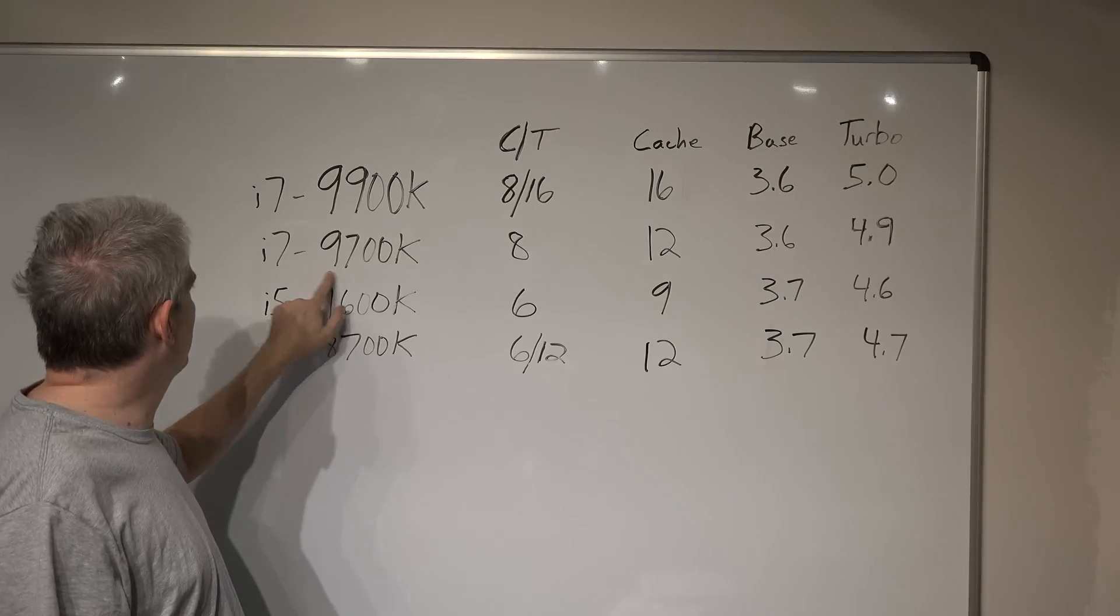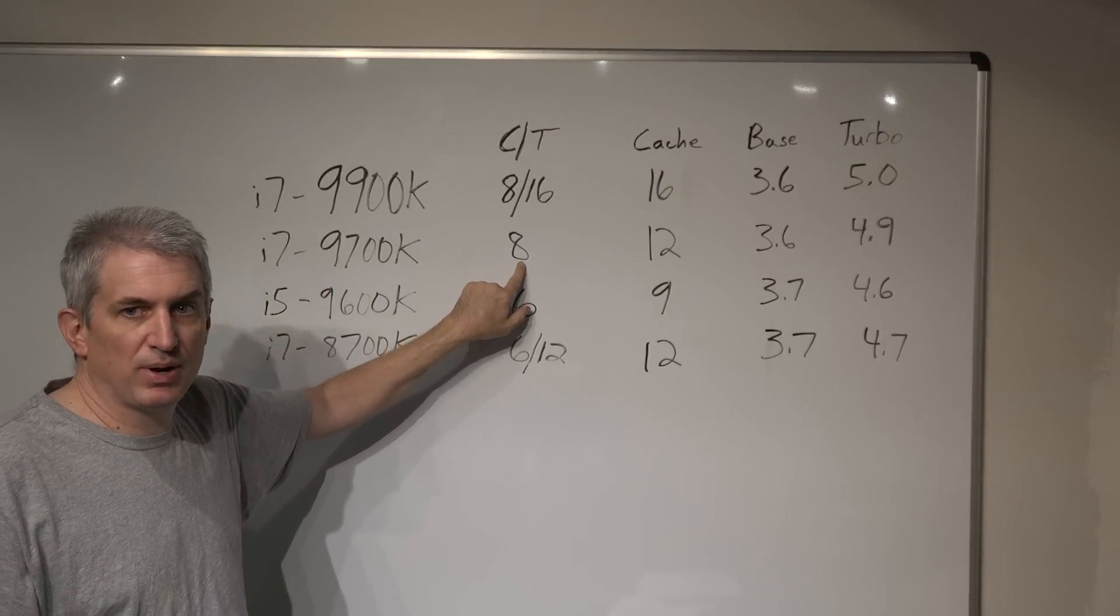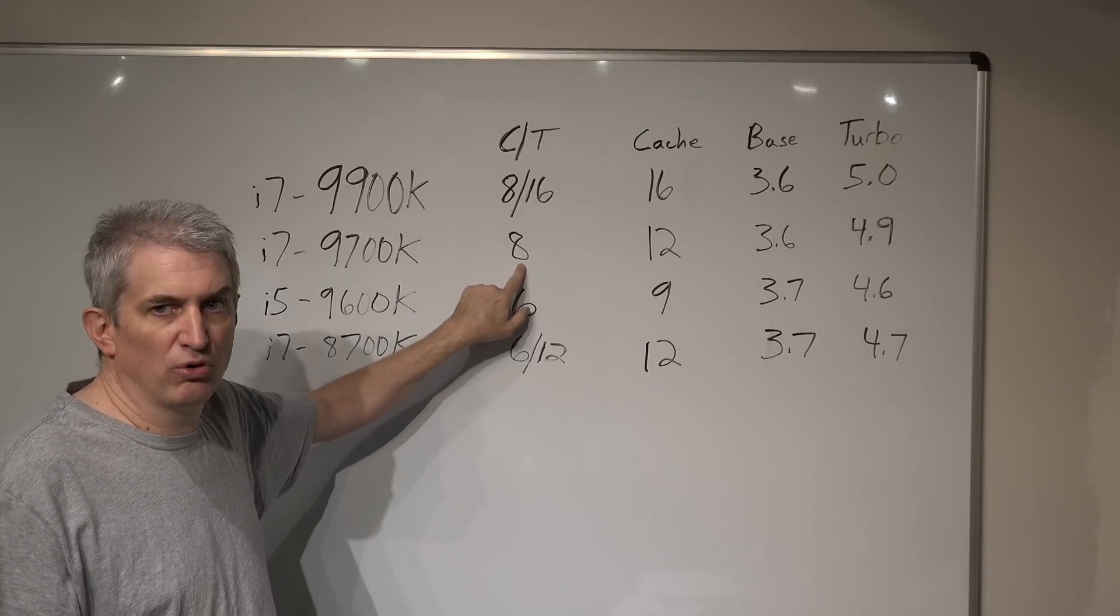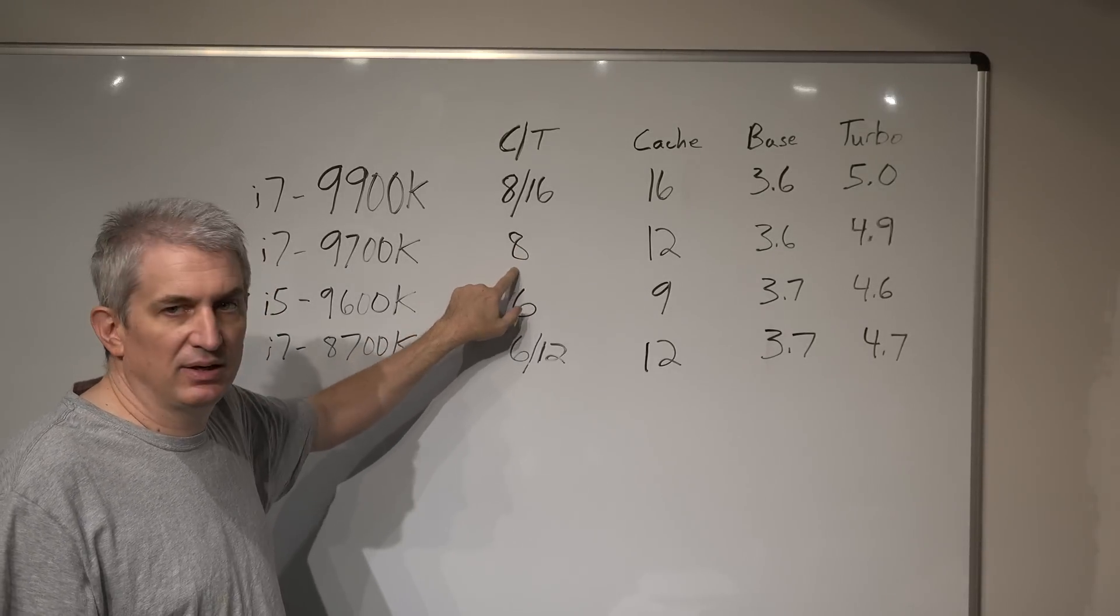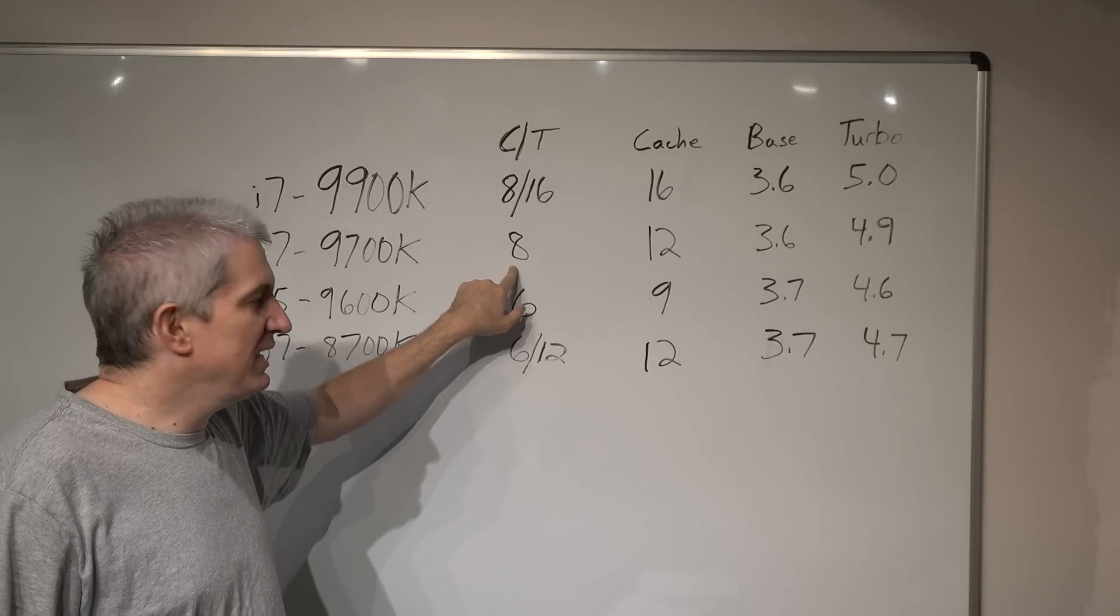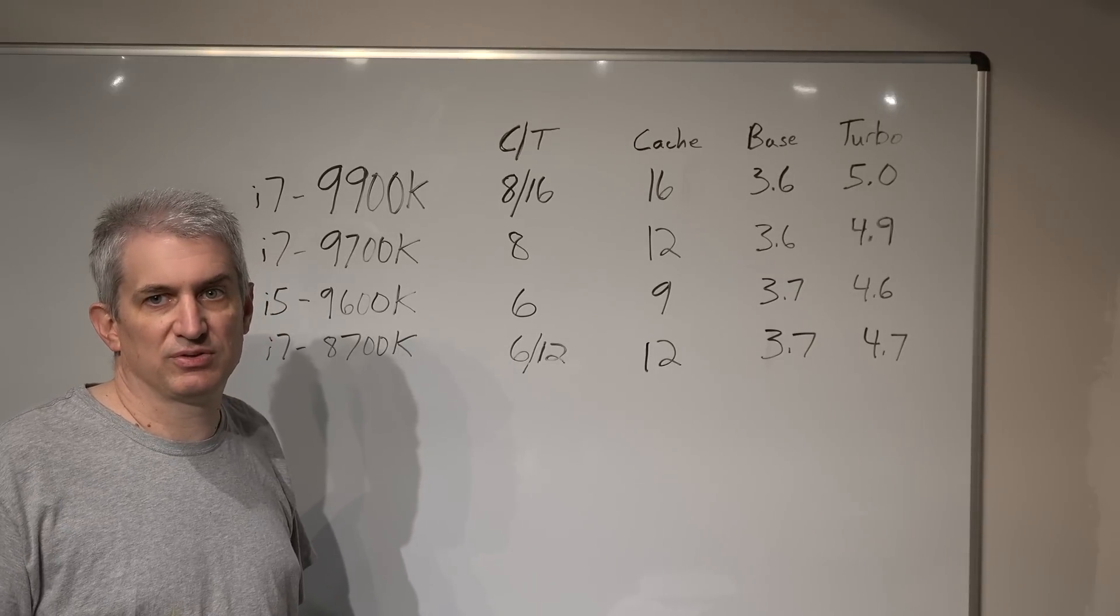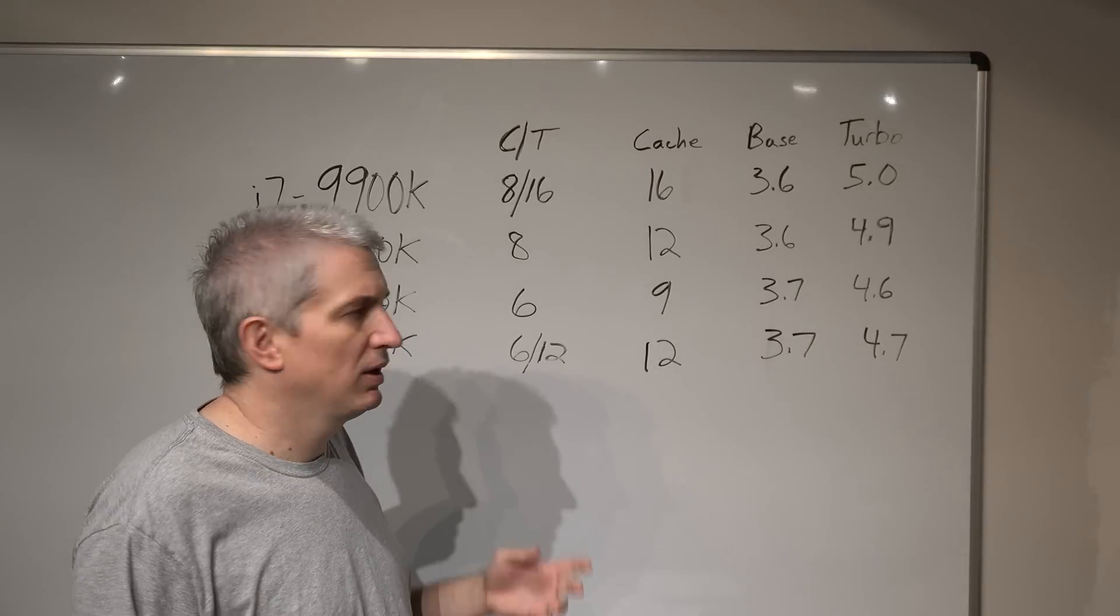One thing that's interesting, I think this is the first i7, this 9700K, it doesn't have hyperthreading. It has straight up eight cores without hyperthreading. But don't let that bother you because right now it doesn't matter. And even in applications where it does matter, it doesn't make a huge difference.